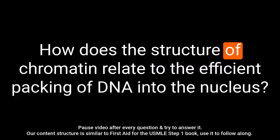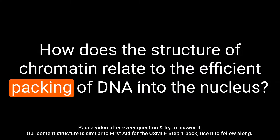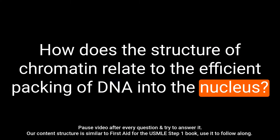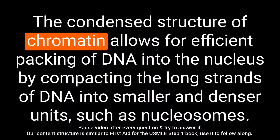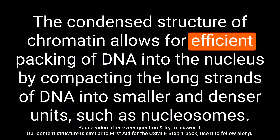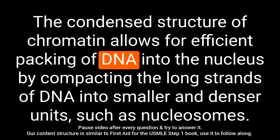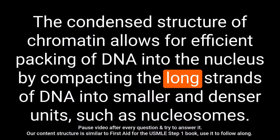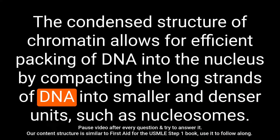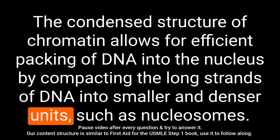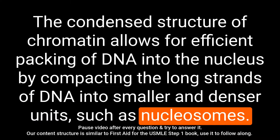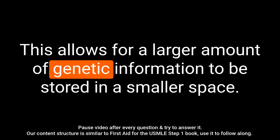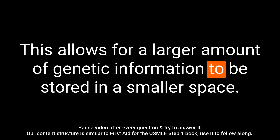Question: How does the structure of chromatin relate to the efficient packing of DNA into the nucleus? Answer: The condensed structure of chromatin allows for efficient packing of DNA into the nucleus by compacting the long strands of DNA into smaller and denser units, such as nucleosomes. This allows for a larger amount of genetic information to be stored in a smaller space.